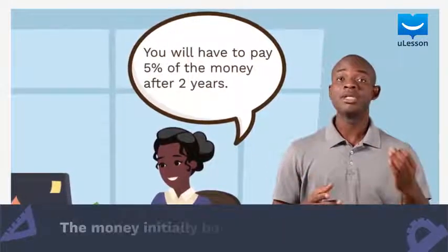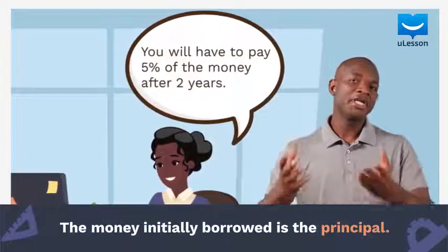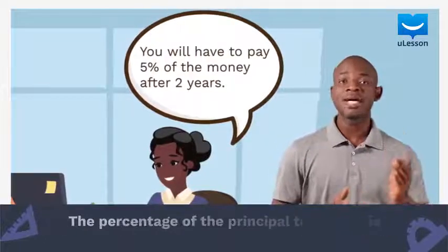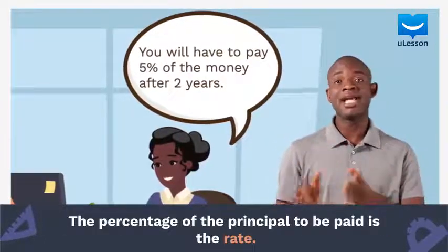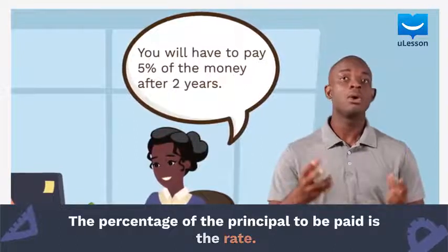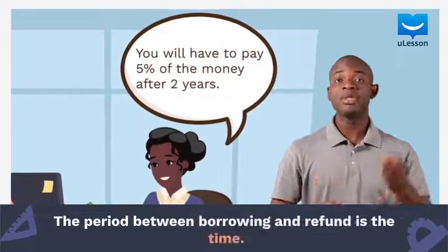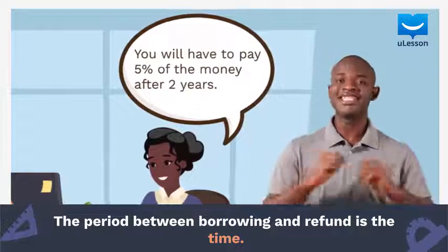The sum of money initially borrowed is the principal. The percentage of the principal to be paid as interest is the rate, while the given period between borrowing and refund is the time.